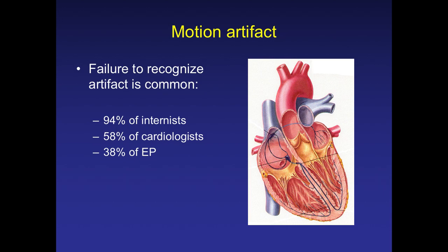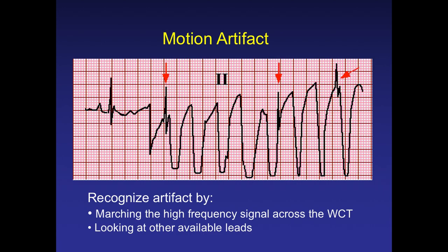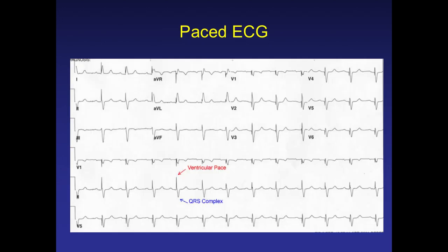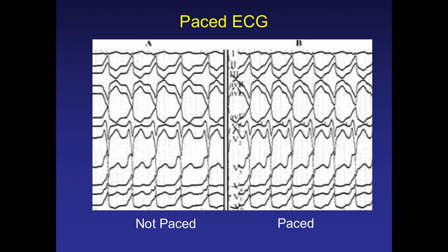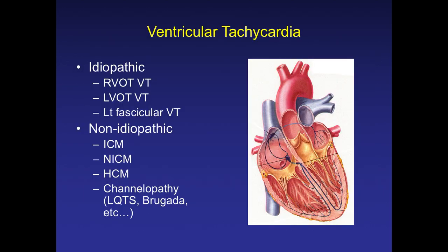Regarding motion artifacts: many times an intern or resident will come running saying there is an emergency with an alarming rhythm. Always look at multiple leads, not just a single lead. Look at the patient and take a history — this gives deep insight into whether it's a real arrhythmia or motion artifact. Also, patients with pacemakers or devices can show wide complex tachycardia, as can patients with intraventricular dyssynchrony or advanced heart failure.